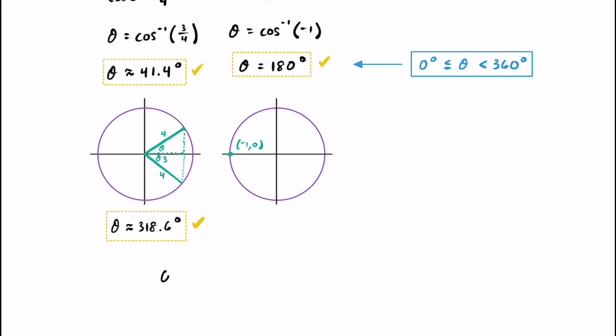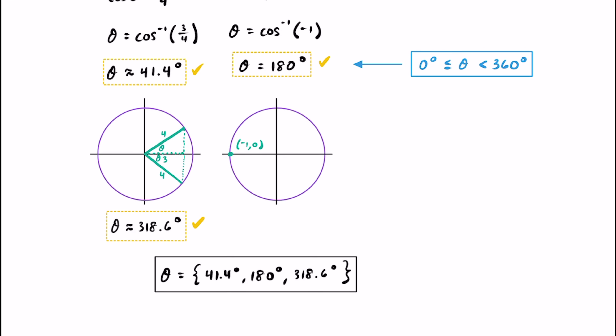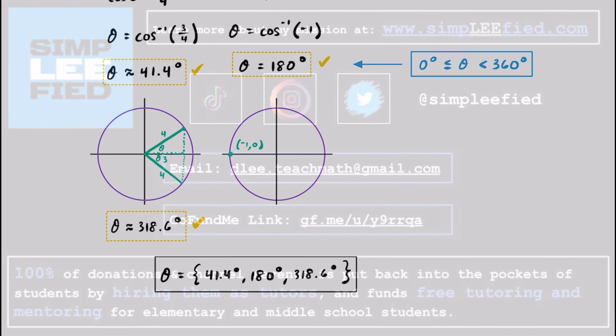So we have three solutions: theta could be 41.4 degrees, as well as 180 degrees, and we found that last one of 318.6 degrees. There are infinite solutions overall, but these are the only three between zero and 360 degrees. And that's how you solve this equation. If you found this video helpful, please consider giving it a thumbs up and sharing with a classmate or friend. Keep up the great work and I'll see you in the next one.